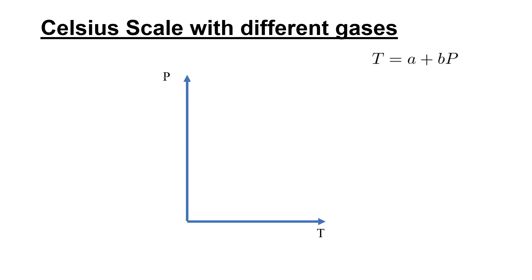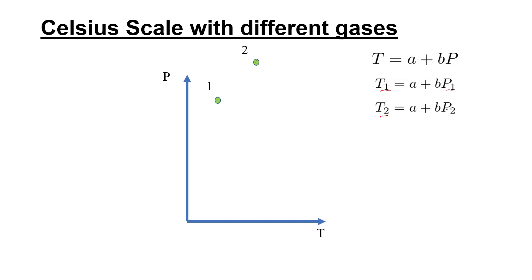We draw a graph with the y-axis as pressure P and x-axis as temperature T for the constant volume thermometer, where T = A + BP. We have two reference points — state 1 and state 2. We get T1 = A + B·P1 and T2 = A + B·P2. With two data points selected, we can draw a line. This is for a particular gas, say gas A.